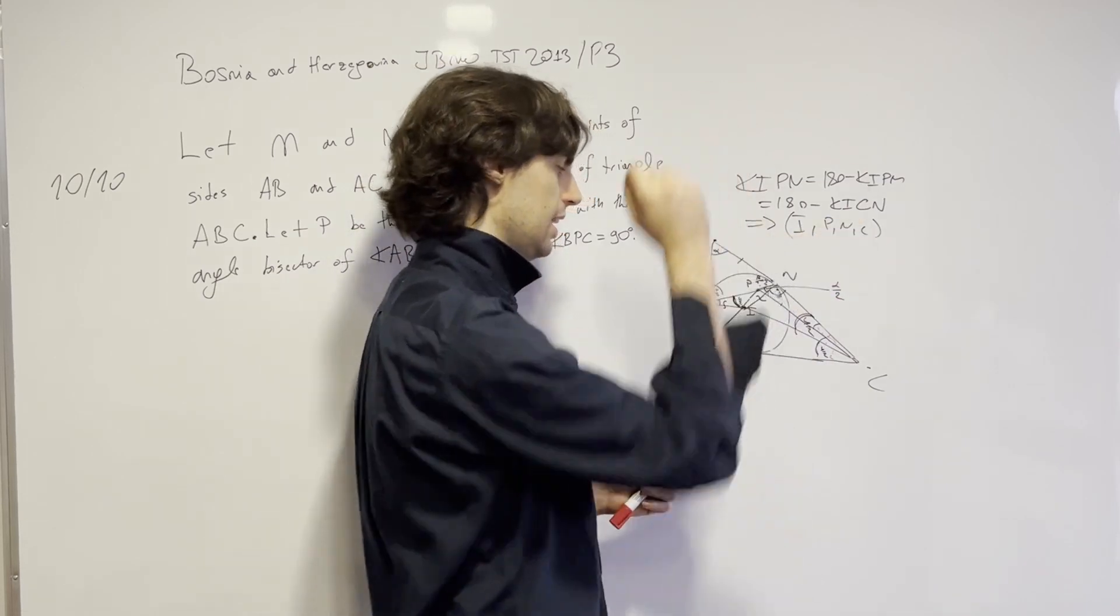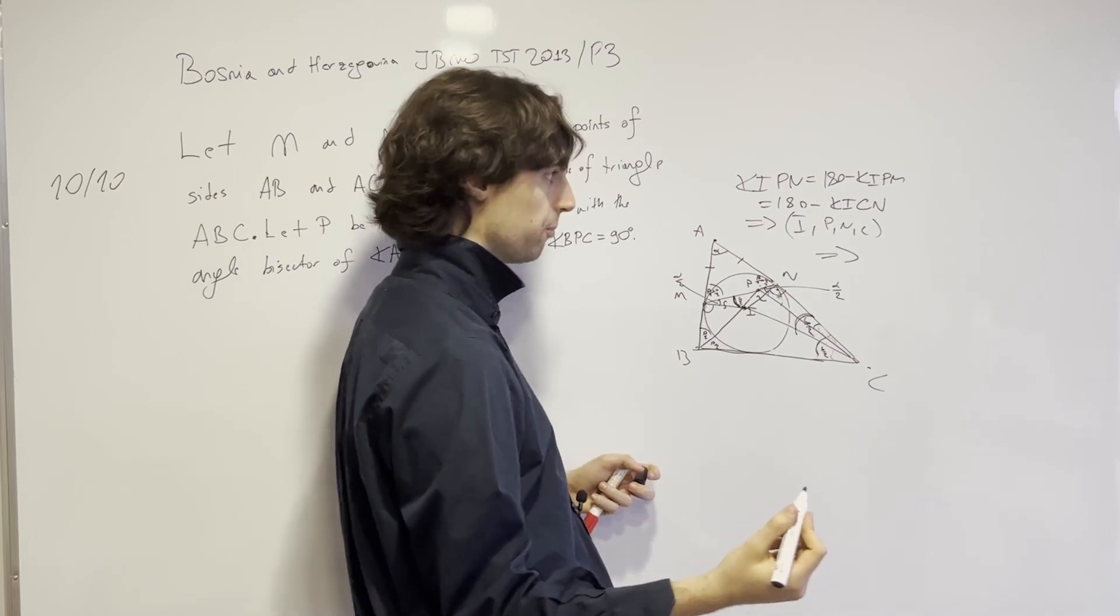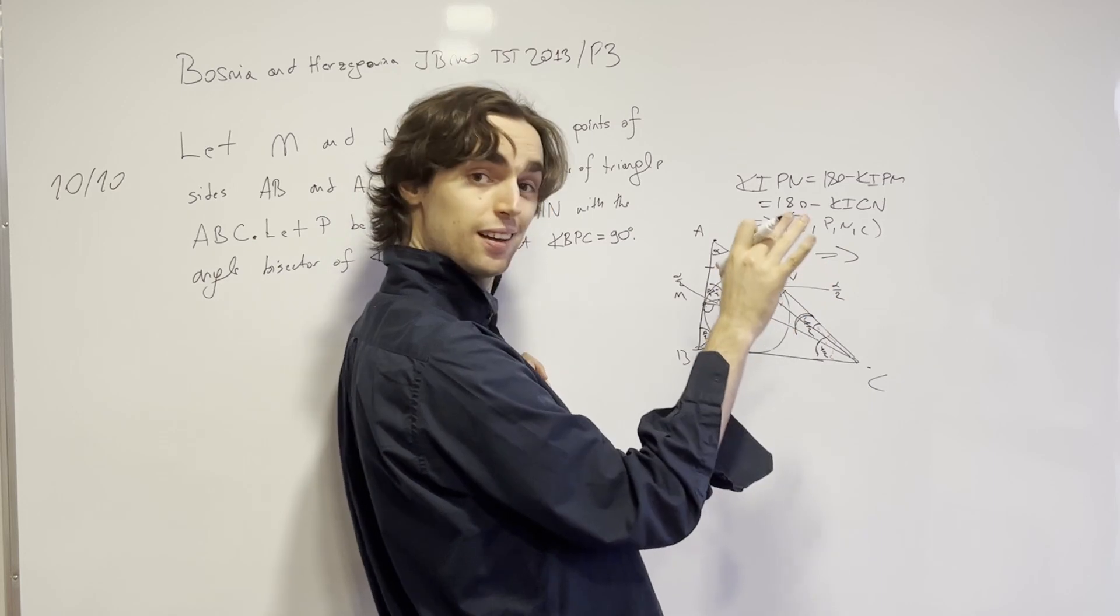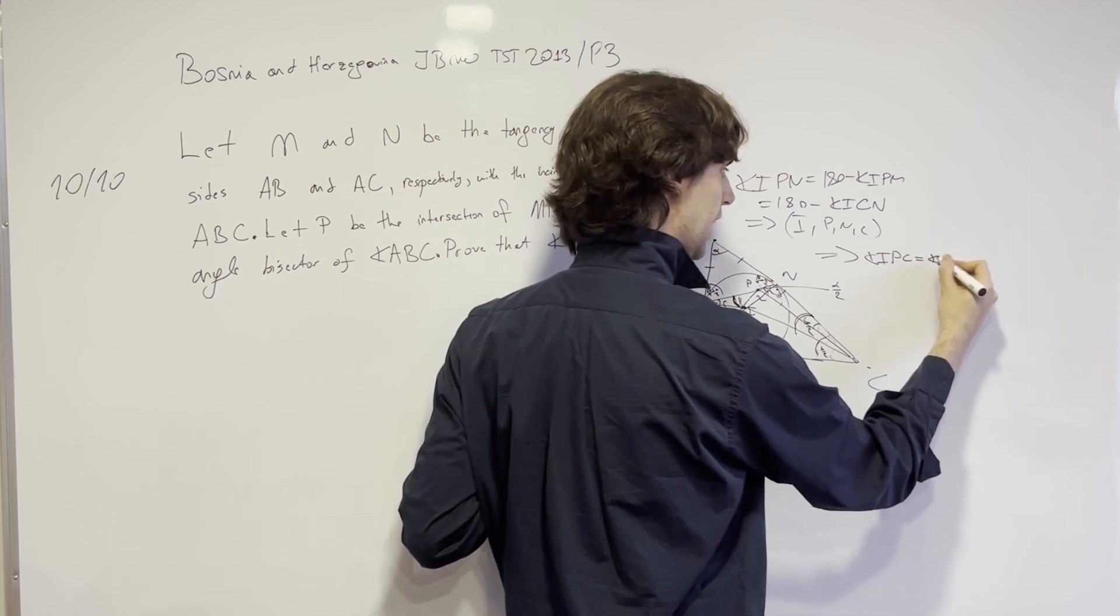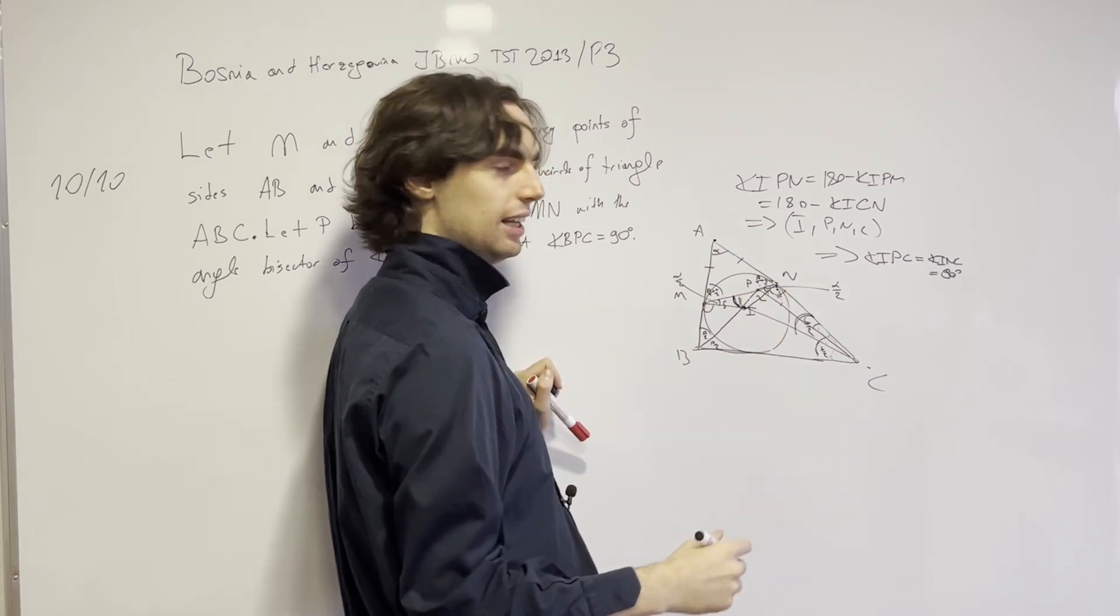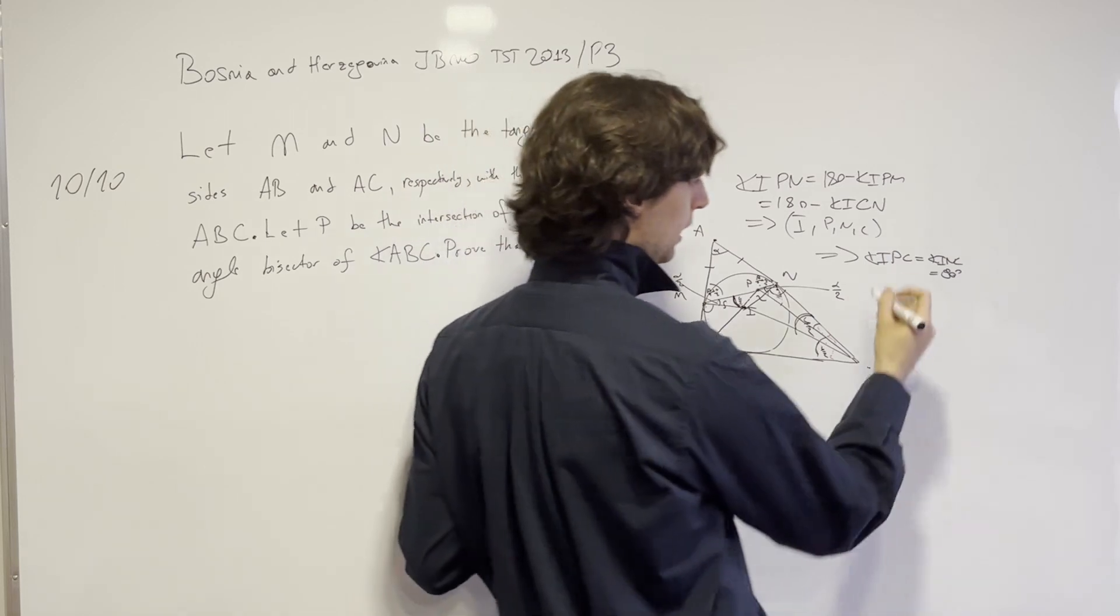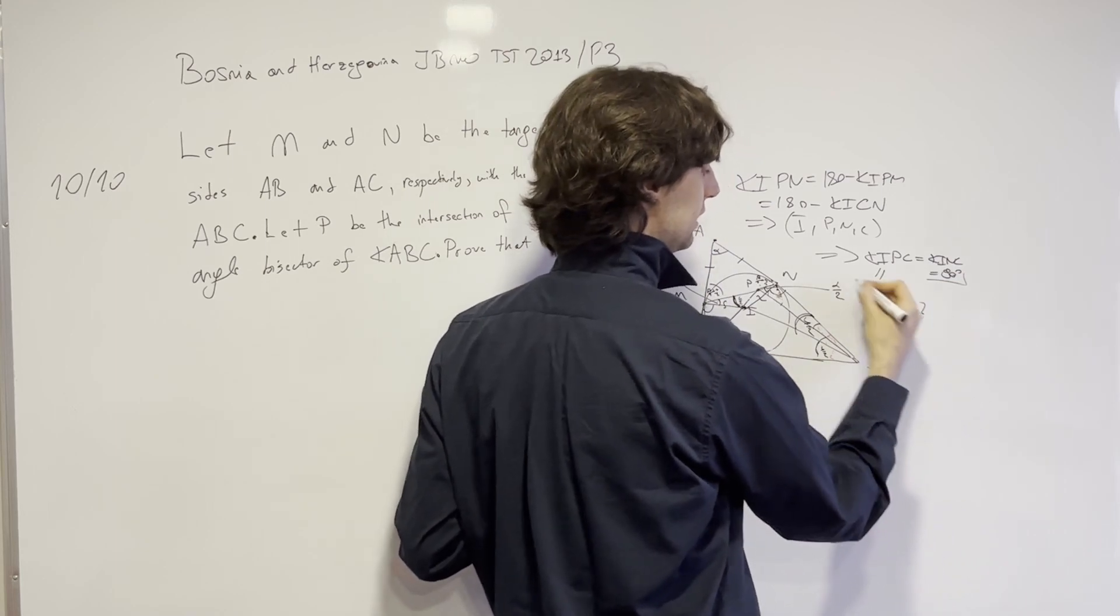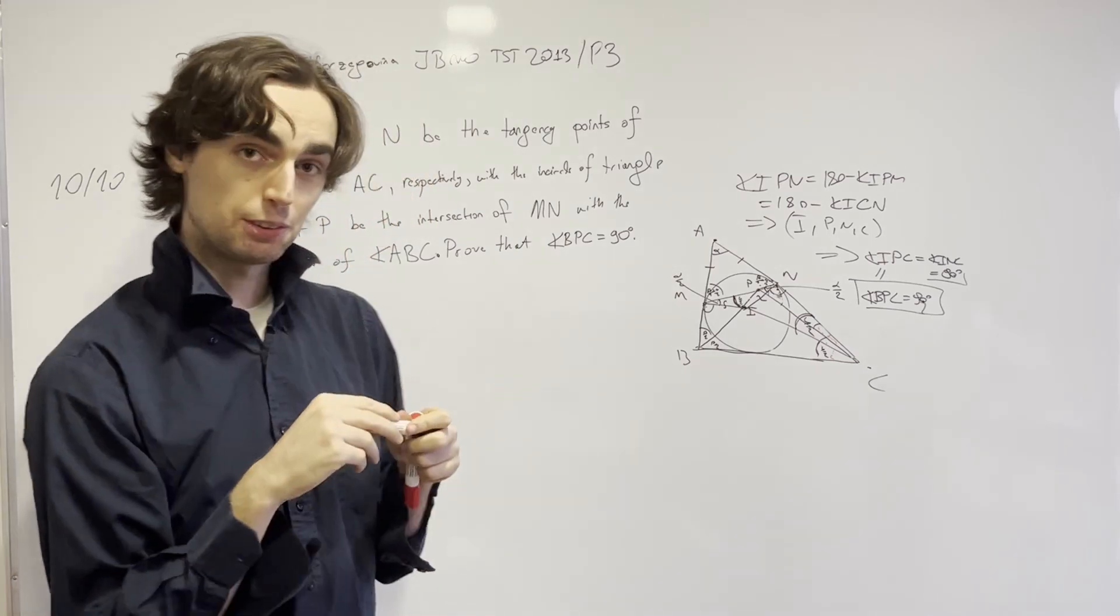Given that these points are concyclic, I'd invite you to pause for five minutes to figure it out. What do we have? We have that the angle IPC is equal to the angle INC, which we know is equal to 90, because N is the tangency point of the incircle and the side AC. And the angle IPC is equal to the angle BPC. So the angle BPC is equal to 90 degrees. This finishes up the problem.